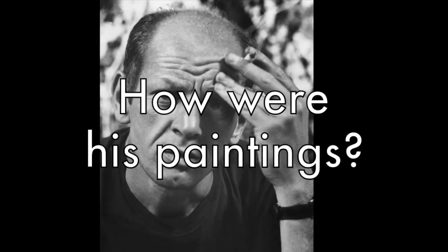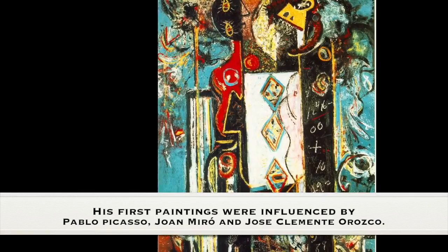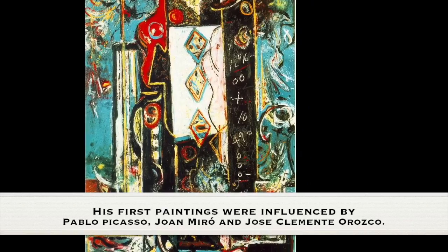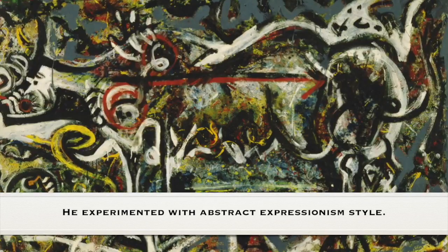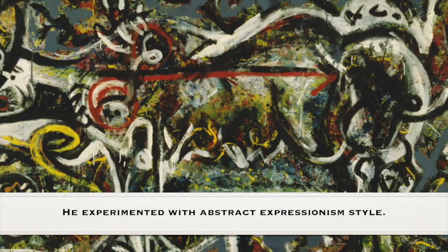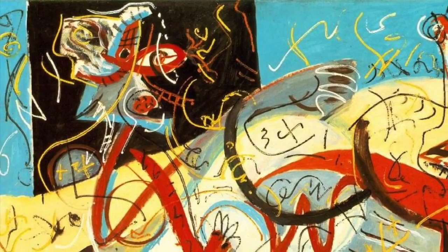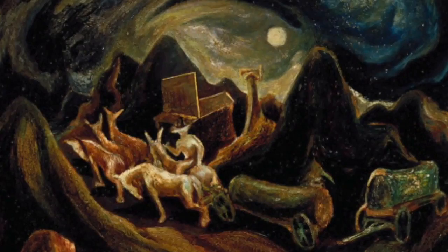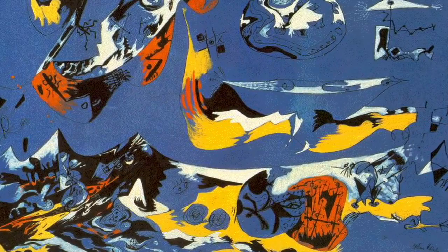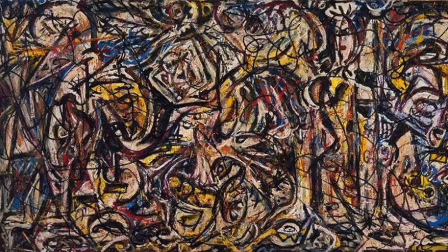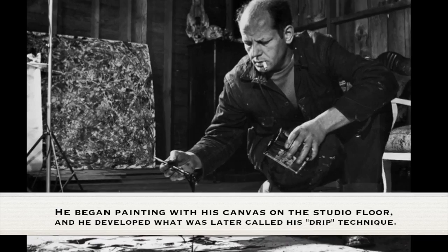How were his paintings? His first paintings were influenced by Pablo Picasso, Joan Miró, and José Clemente Orozco. He experimented with abstract expressionism style. He began painting with his canvas on the studio floor, and he developed what was later called his drip technique.